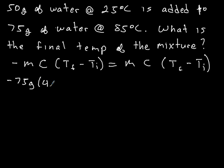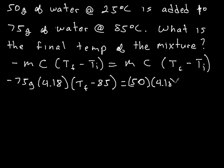Heat capacity of water is 4.18. I'm not going to do units here, but you should be keeping track of units. The T final is our unknown. The initial temperature of this was 85 degrees Celsius. And then the heat gained. The mass of that was the 50 grams of water. Heat capacity of that is 4.18. And the T final minus the initial temperature of 25.